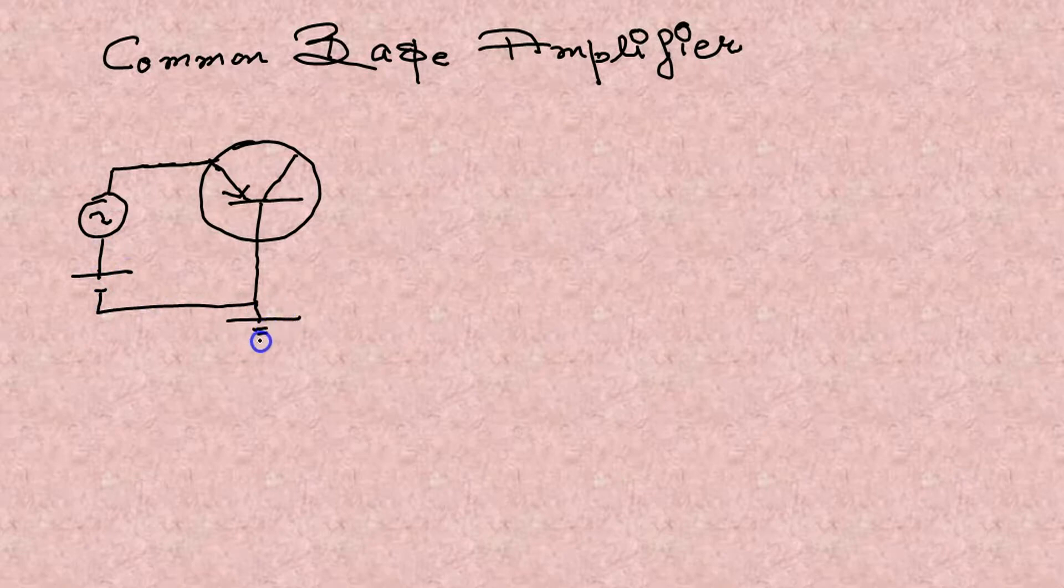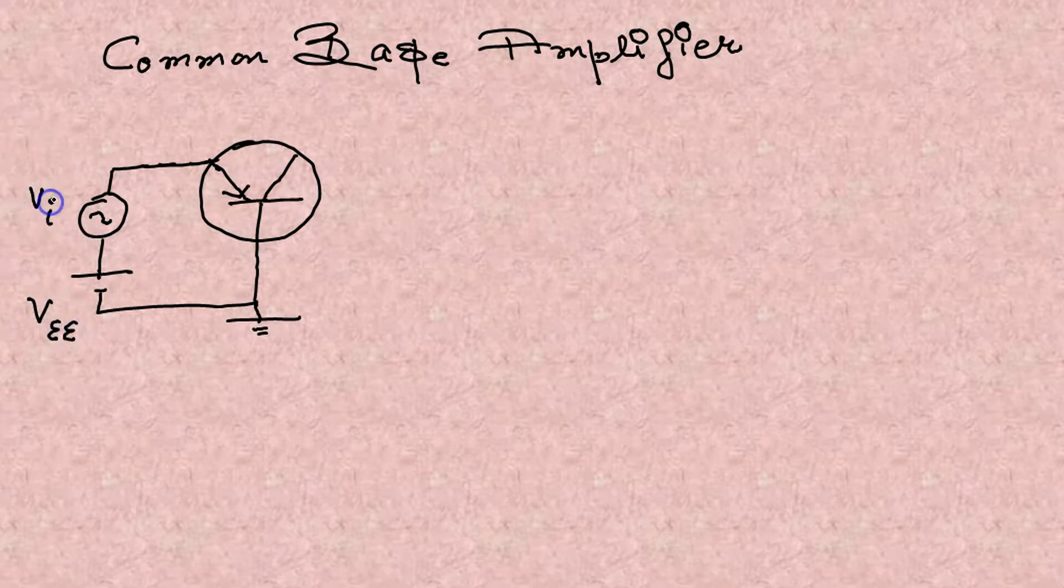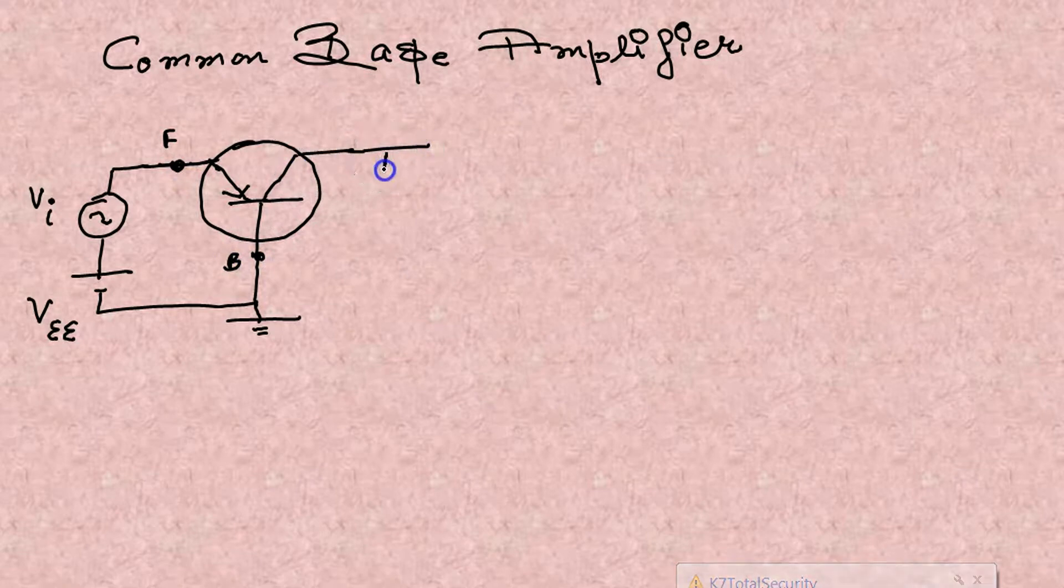Then forward biasing, emitter to base, the battery is named as forward bias VEE. In small signal, VI emitter to base to collector.